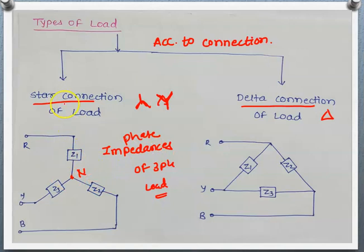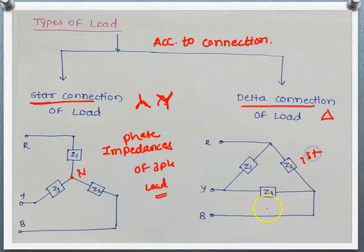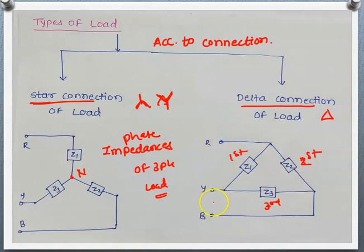This type of connection is known as star connection of load. When the impedances are connected in a loop — first, second, and third impedance connected one after another — with three terminals brought out for supply connection, this is known as delta connection of load, where Z1, Z2, Z3 are the impedances of the three-phase load.